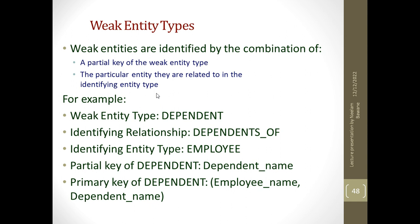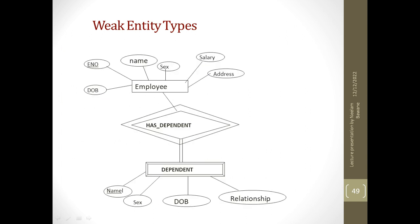The weak entity is 'dependent' and the strong entity set, also called the identifying entity set, is 'employee'. The partial key of the weak entity set is 'dependent name'. So the primary key of the weak entity set will be the key of the strong entity set combined with the partial key of the weak entity set.